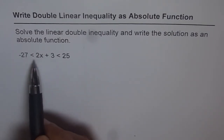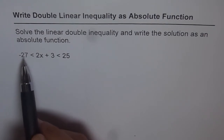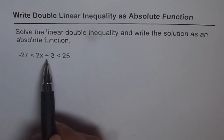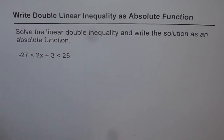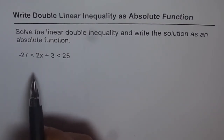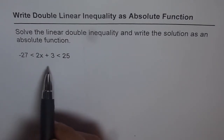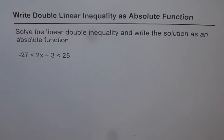We have two inequality signs here. We read this as: minus 27 is less than 2x plus 3, which is less than 25. Since there are two inequality signs, we call it a double inequality, and this function is linear. It could be polynomial or quadratic also at times.